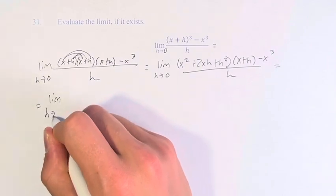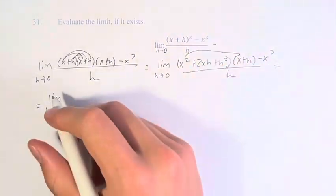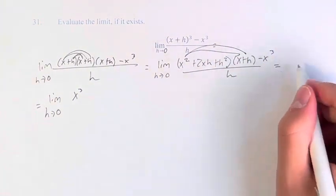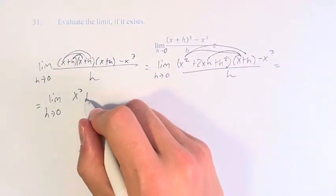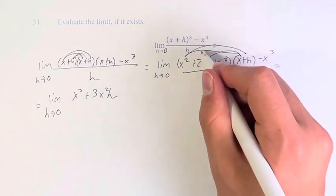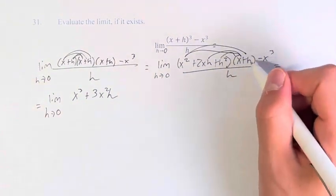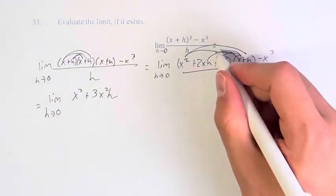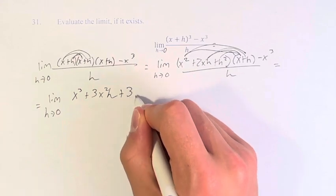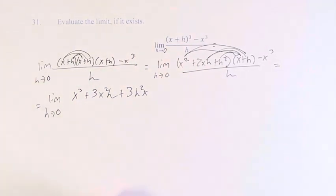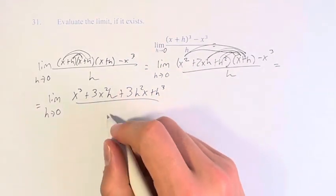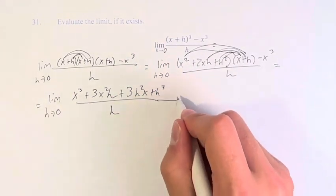So we have the limit as h approaches 0. x² times x is x³ plus x² times h plus 2x² times h is plus 3x²h, plus h² times x plus another 2h² times x is plus 3h²x plus h³ divided by h minus x³.